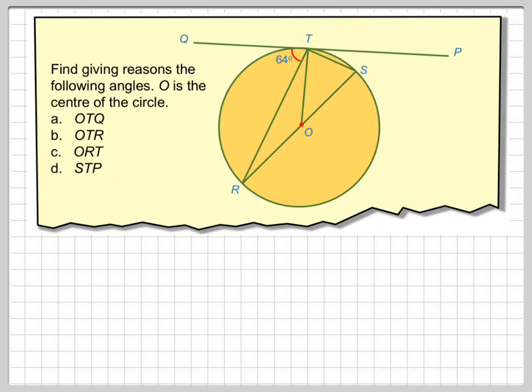So first of all, we need to find angle OTQ. So this is this angle here. Because this is the centre of the circle, this line here is the radius.